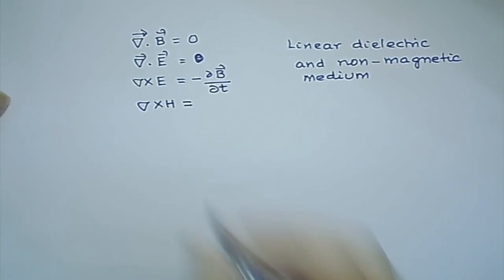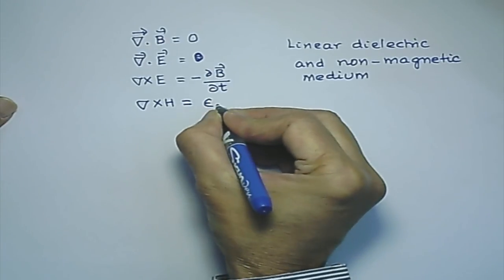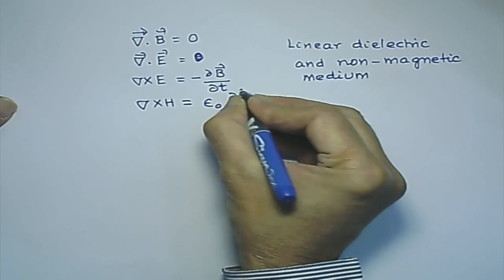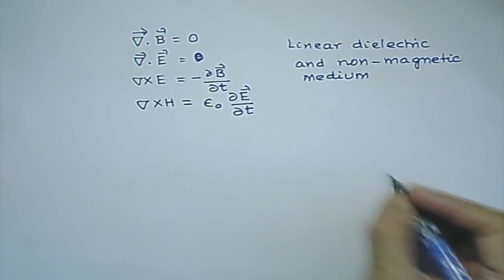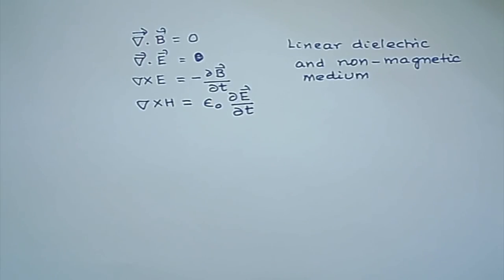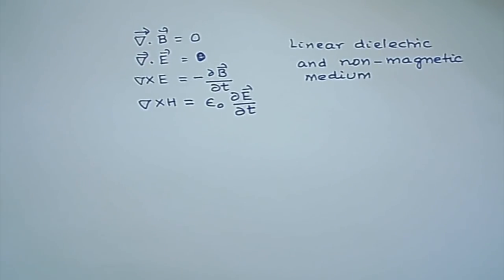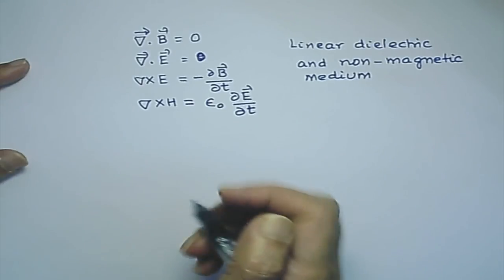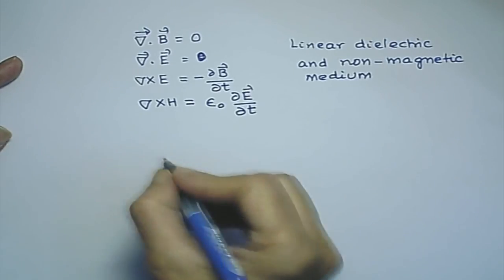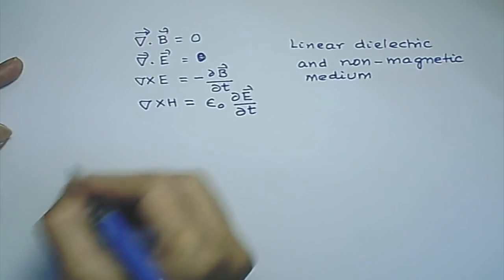So del cross H equals epsilon_0 times dE/dt. Basically what I have done is written Maxwell's equations in terms of only E and B, rather than bringing in H and D. I will remove H shortly as well. Now I want to find the solutions of these equations.